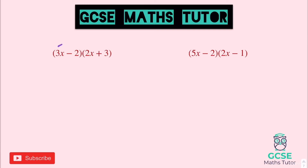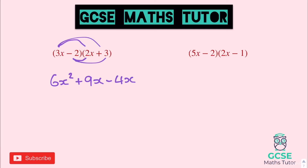Looking at the first one: 3x times 2x is 6x squared. 3x times 3 is 9x, so plus 9x. Minus 2 times 2x is minus 4x. And minus 2 times 3 is minus 6. Tidying that up: 9 take away 4 is positive 5, so positive 5x. And minus 6.